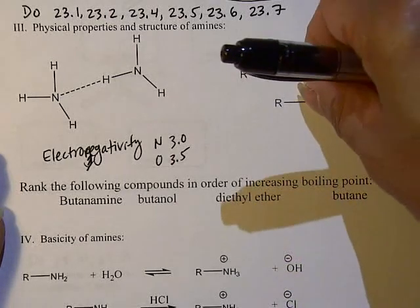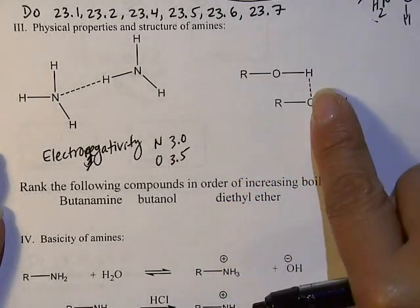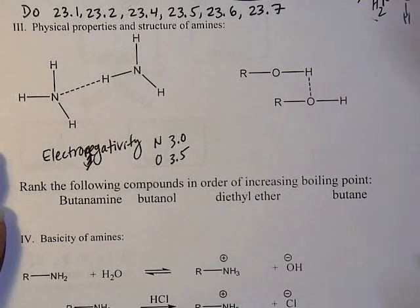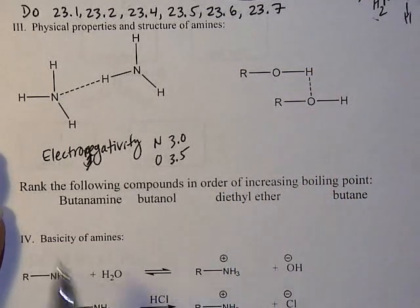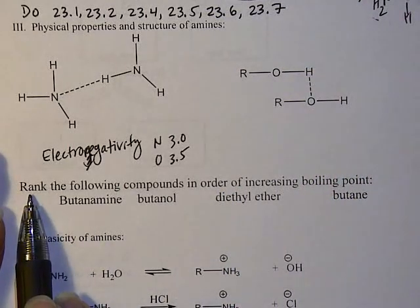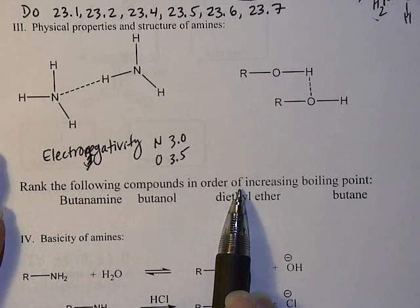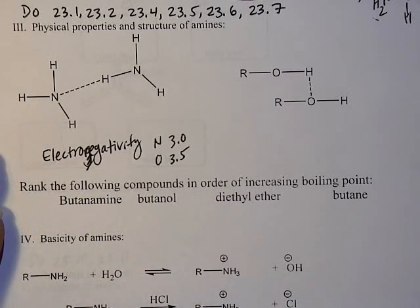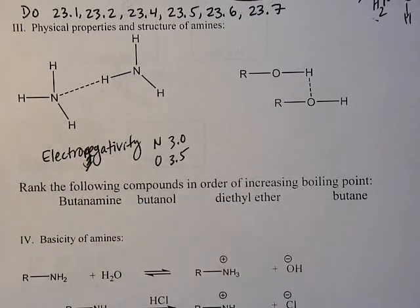Right. So if the hydrogen bonding are strong, more energy is going to be needed to break this apart so that it could become vapor. Right. So you should be able to answer this question, rank the following compounds in order of increasing boiling points.